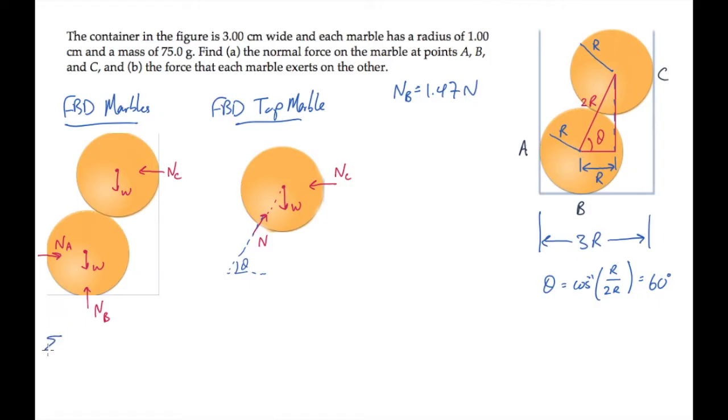Now if we instead sum forces in the horizontal or x direction, we see there are two, telling us that the normal force on the left side at point A equals the normal force on the right side at point C. We don't know that value yet.